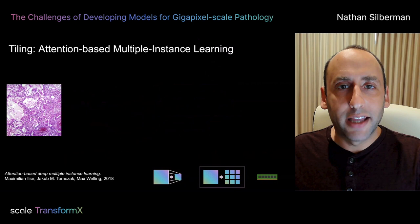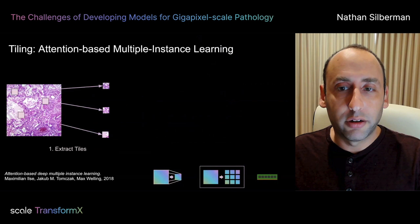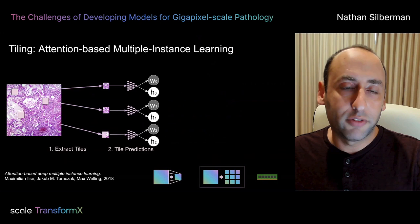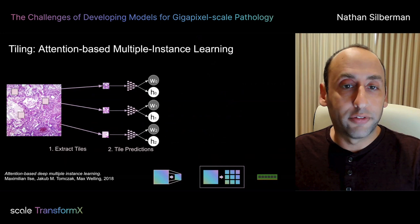One approach that alleviates some of this is attention-based multiple instance learning. In this approach, we start by sampling some tiles from the scene. Tiles are fed to our machine learning model, which produces both a prediction about whether the tile is normal or tumorous, as well as a weight — essentially a number that represents how much the final prediction should attend to this tile. Finally, the predictions are aggregated through a differentiable function, weighted by the predicted weights, to produce a score for the entire slide.